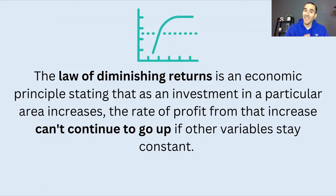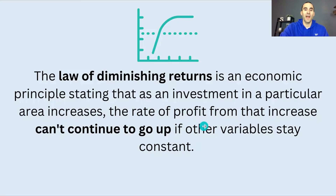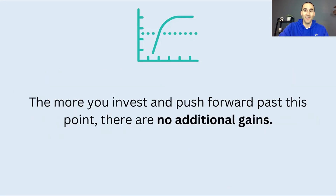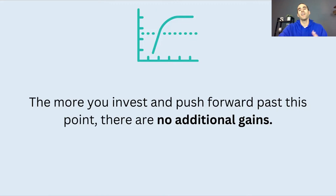Full disclosure, I am not an accountant or an economist, but there are a couple of basic principles and accounting terms we're going to go over in this video. We're going to start with an economics principle called the law of diminishing return. The law of diminishing return states that as an investment in a particular area increases, the rate of profit from that increase can't go up if other variables stay constant. In other words, the more you invest and push past this point of diminishing return, there are no additional gains. This is true across many aspects of life and especially true inside Google Ads. We're going to identify that point of diminishing return for your business so you don't go past it and waste money.